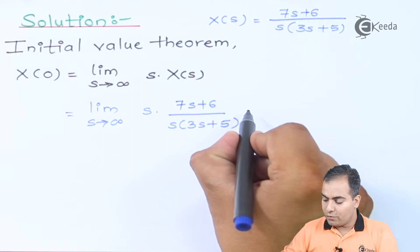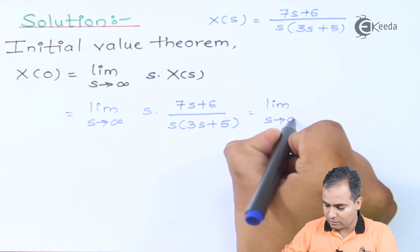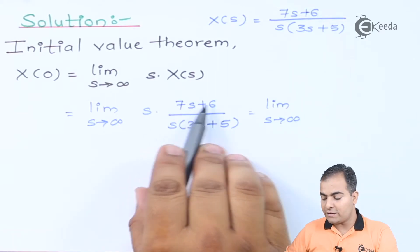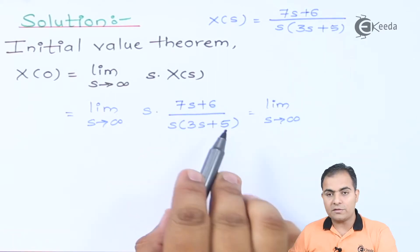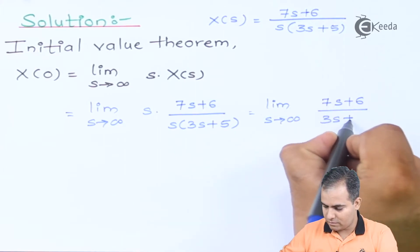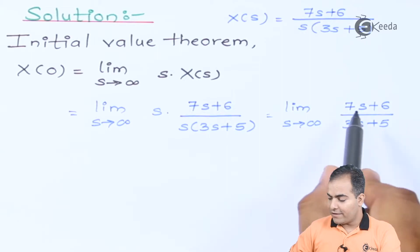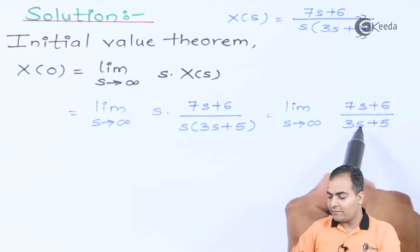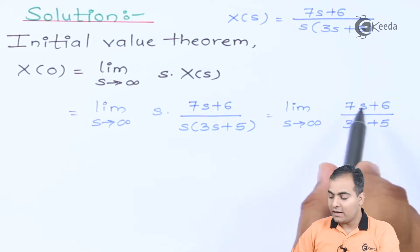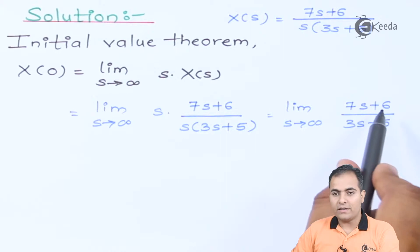After cancelling the two s terms, what remains is: limit as s tends to infinity of (7s + 6) in the numerator and (3s + 5) in the denominator. Now, if you are able to take s common from both numerator and denominator, both s terms will get cancelled.